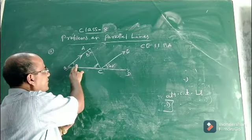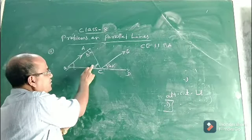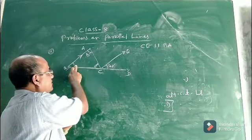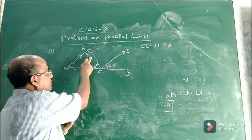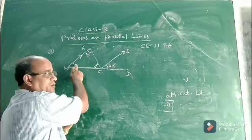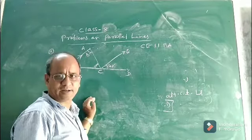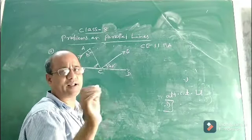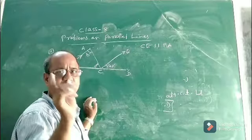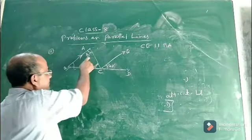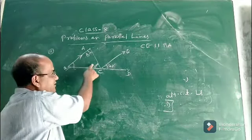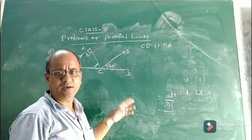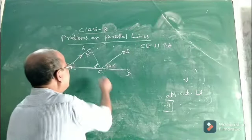We got angle ABC equal to 40 degrees. Now we can easily find angle C using the angle sum property. Since angle A is 75 degrees and angle B is 40 degrees, their sum is 115 degrees, and subtracting from 180 gives angle C equal to 65 degrees — because the sum of the three interior angles of a triangle is 180 degrees.